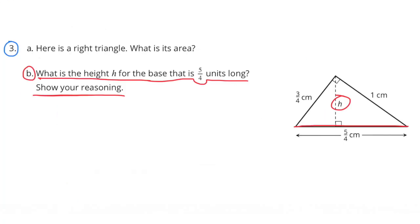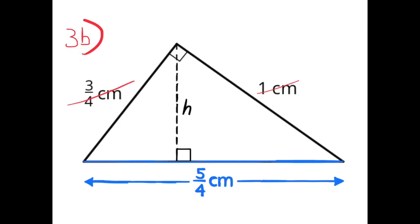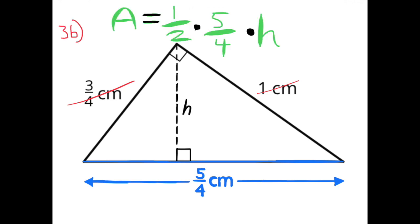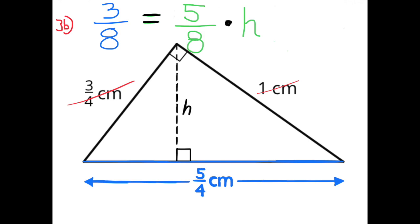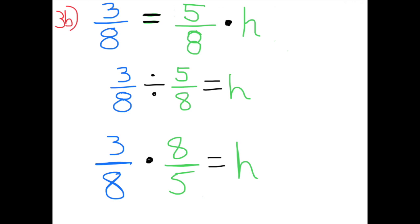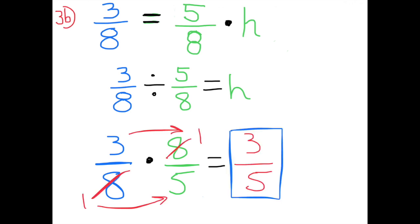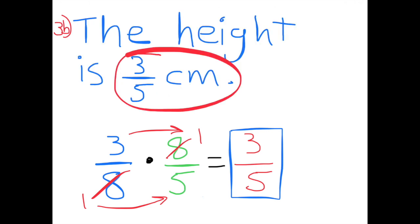Part b: What is the height h for the base that is five-fourths units long? The area formula gives one-half times five-fourths times h equals three-eighths, which simplifies to five-eighths times h equals three-eighths. Solving: h equals three-eighths divided by five-eighths, which is three-eighths times eight-fifths, giving three-fifths. The height is three-fifths centimeters.